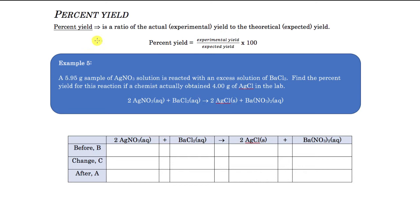When calculating percent yield, it is the ratio of the actual yield — which is the experimental value, what you actually get in the lab when you do the experiment — to the theoretical yield. The theoretical is your expected amount, what you would expect to get by doing a calculation. Everything we've been doing on paper is strictly theoretical because we're just trying to figure out what those masses should be.